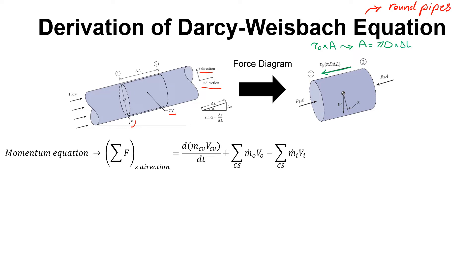As a result, the shear stress force — F_shear — would be equal to τ₀ times π times D times delta L.